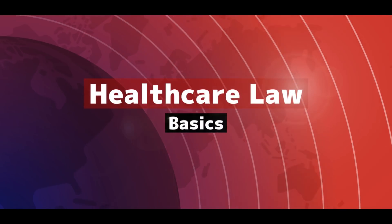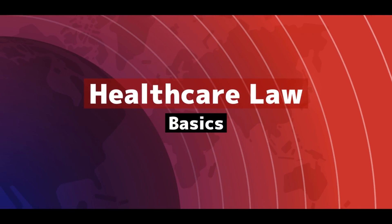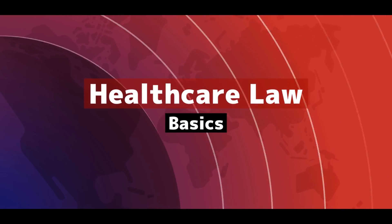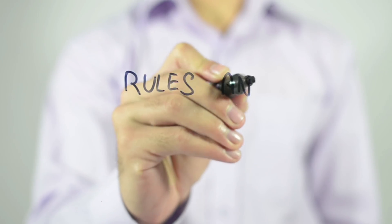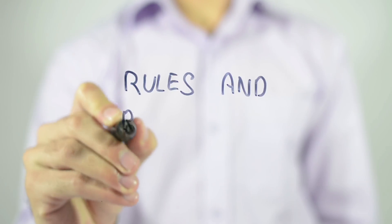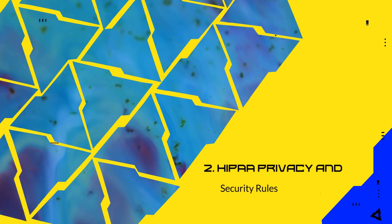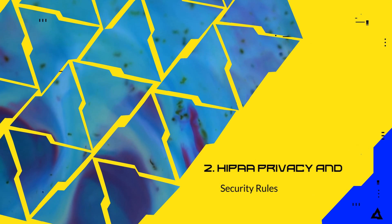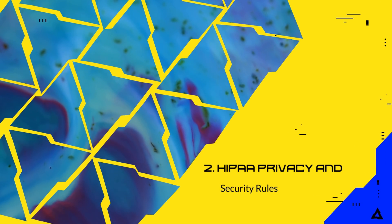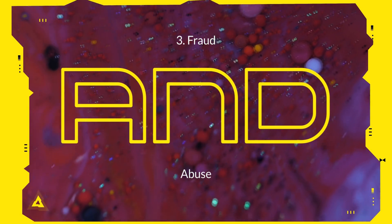Lesson two: healthcare law requirements to know. For medical coders, it is essential to be familiar with the basics of the rules governing the medical industry: 1. Protected health information (PHI). 2. HIPAA's privacy and security rules. 3. Fraud and abuse.